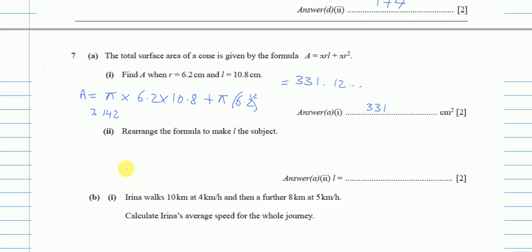For part 2 we have to make L the subject of the formula. The term π r squared is positive on the right hand side, so I will take it to the left hand side where it will become negative. So it becomes A minus π r squared equals π r l.